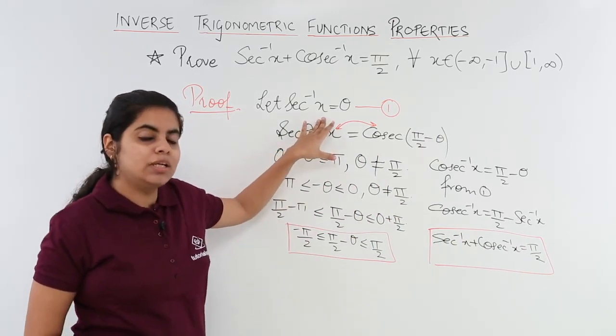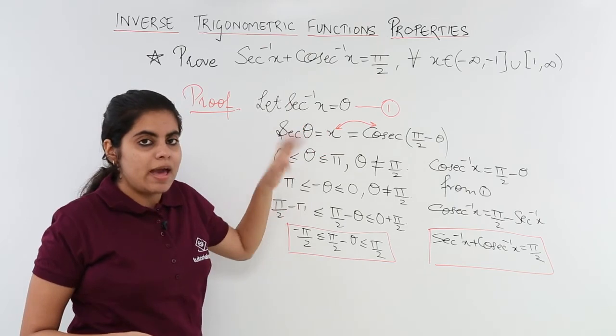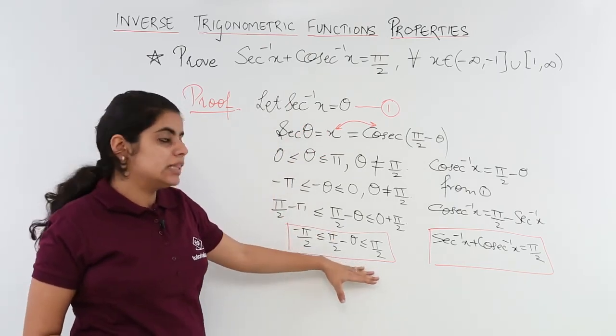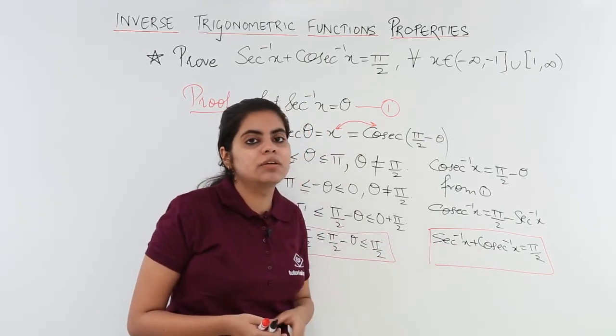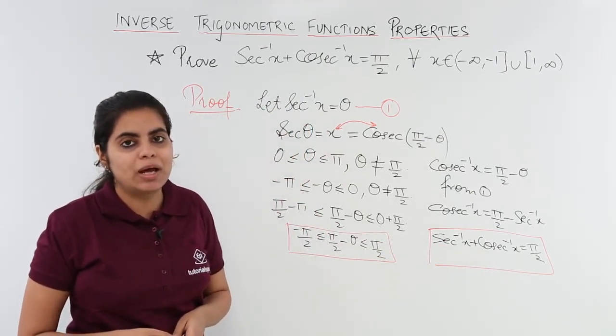sec⁻¹x = θ, I am repeating the proof again, was assumed and then with the help of it and the interval and domain knowledge, I proved sec⁻¹x + csc⁻¹x = π/2.